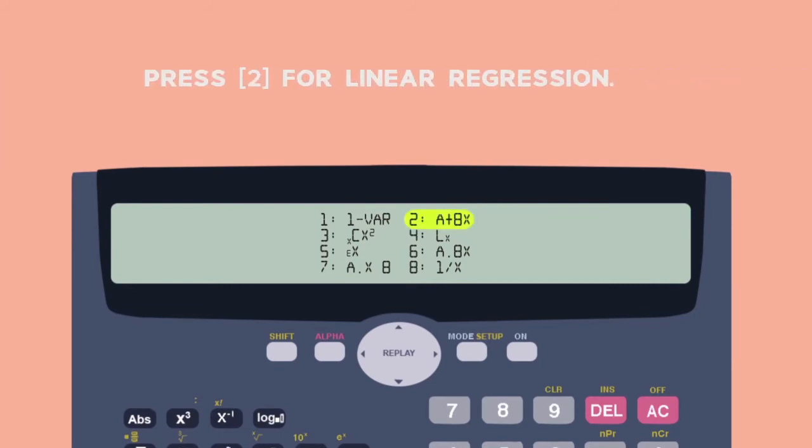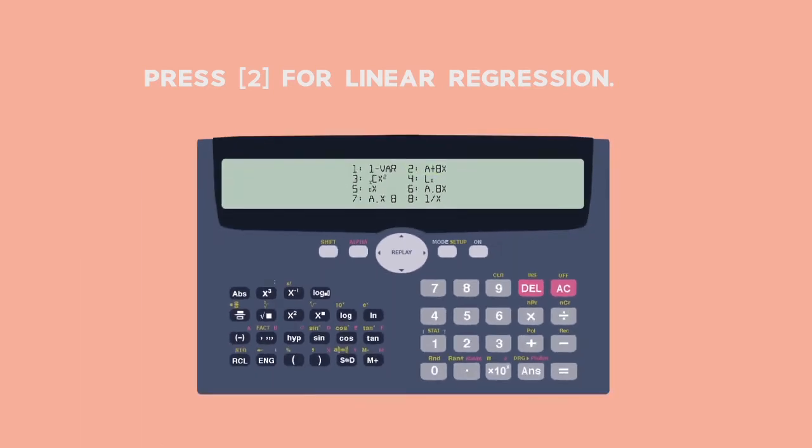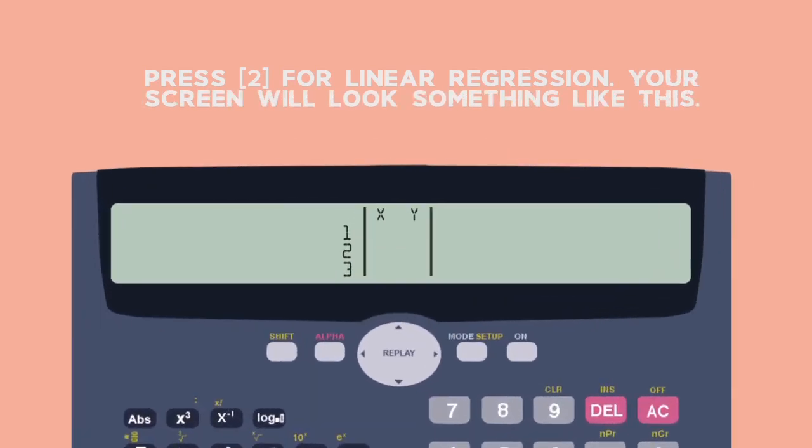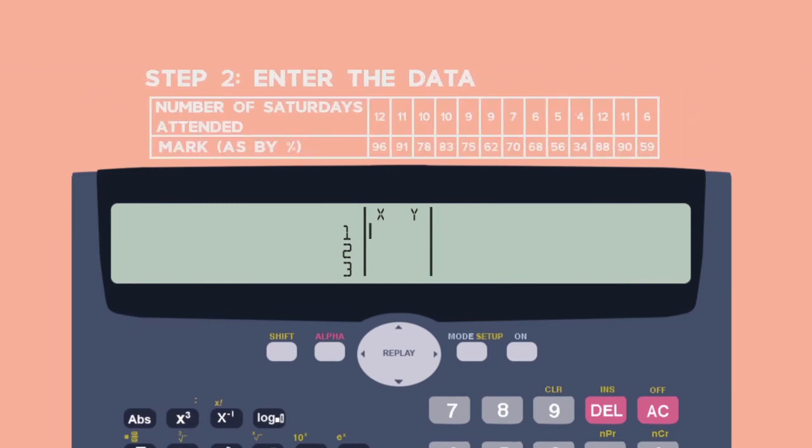Select 2, the A plus BX option for Linear Regression. Your screen will look like this.